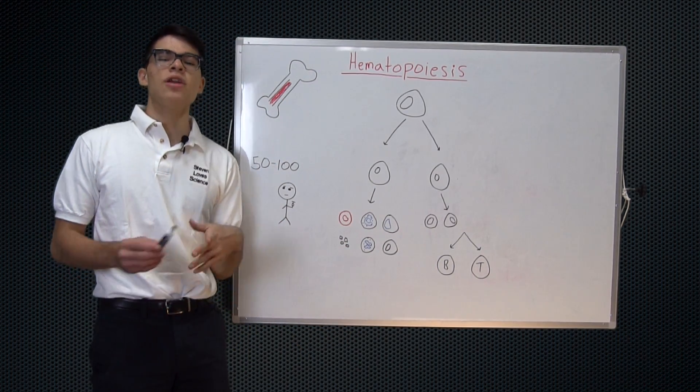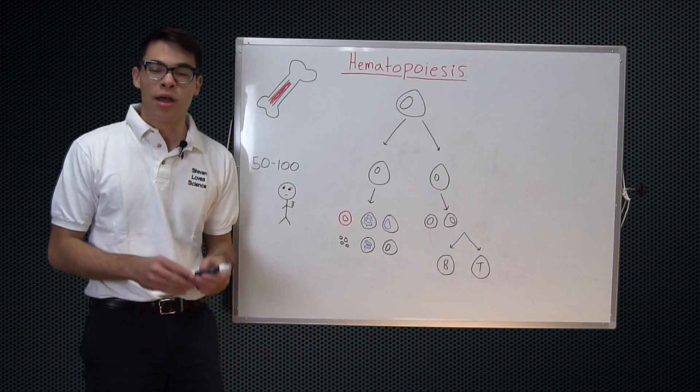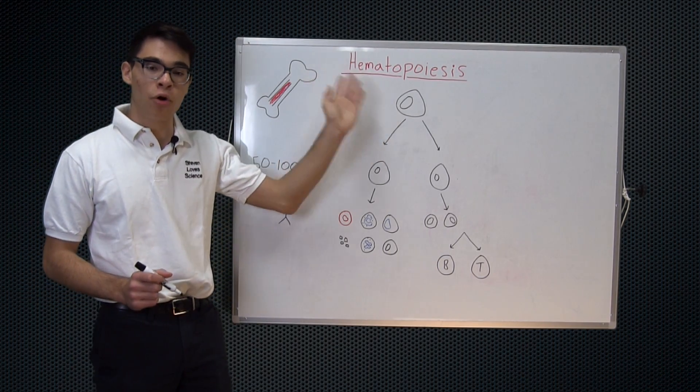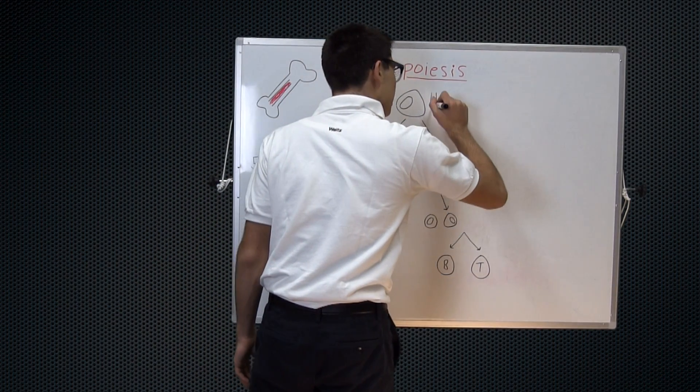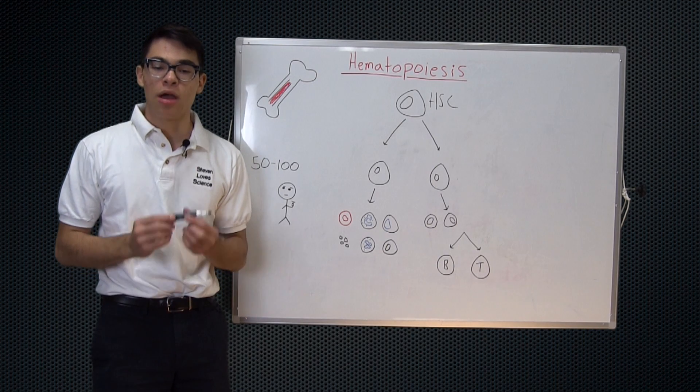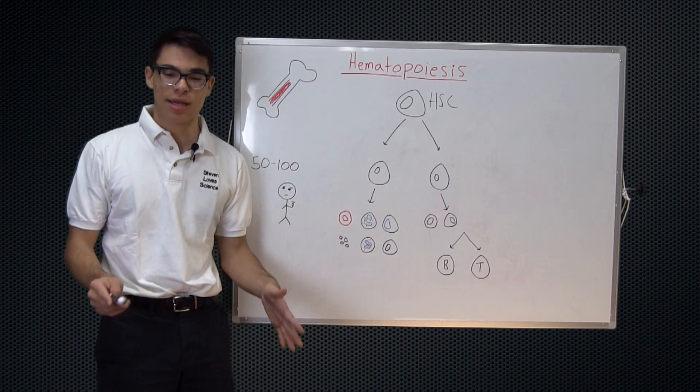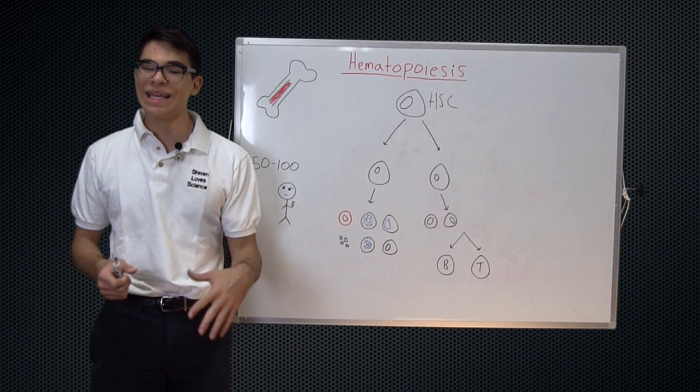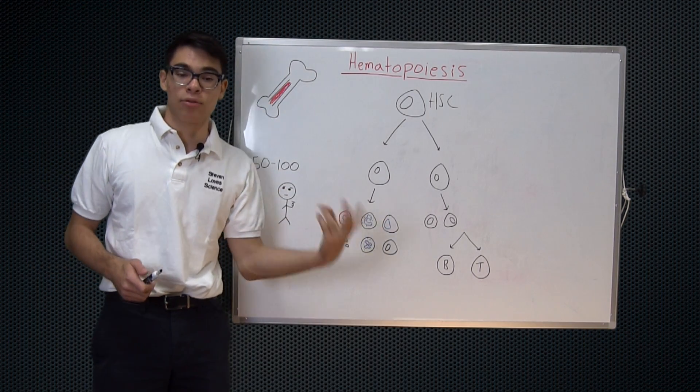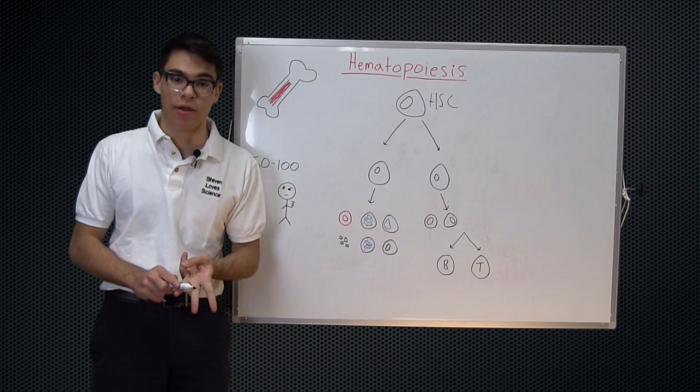I believe in previous videos we've discussed cells that are capable of differentiating into any type of cell and these are called stem cells. So up here we have our hematopoietic stem cell which we can abbreviate HSC. The hematopoietic stem cell is what's known as a pluripotent stem cell which is a general term to describe a stem cell that is capable of differentiating into any specific kind of cell.